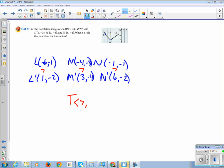To go from negative 1 to negative 2, I would subtract 1. To go from negative 3 to negative 4, I subtract 1. And to go from negative 1 to negative 2, I subtract 1. So the translation is, x-coordinate moves 7 to the right, and y-coordinate moves 1 down.